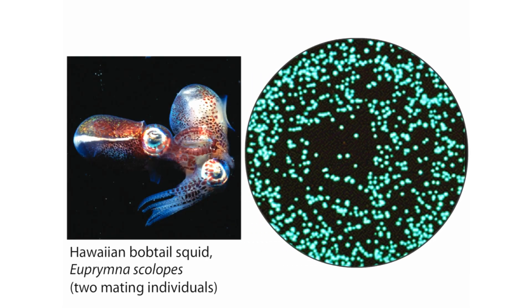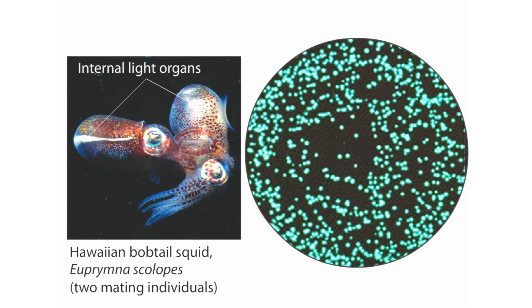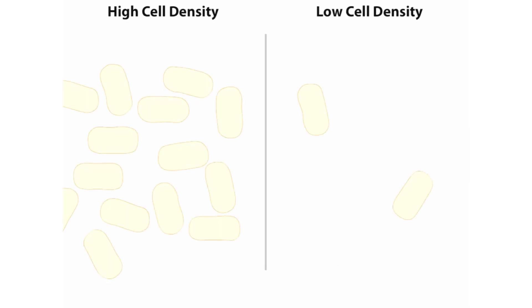The bacteria colonize and receive nutrients inside the light organ, a structure located in the squid's mantle cavity. The bacteria glow only under certain conditions. The genes needed to make light are off when bacterial cell densities are low, such as in seawater, but turn on under crowded situations such as in the light organ of the squid.